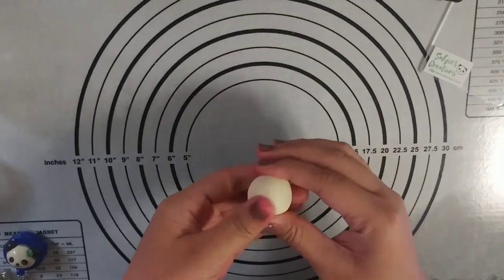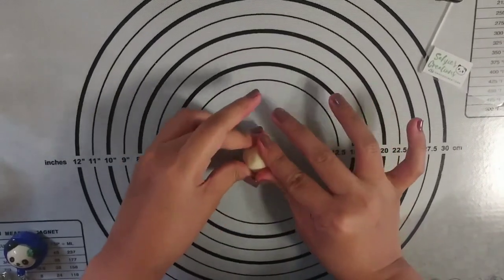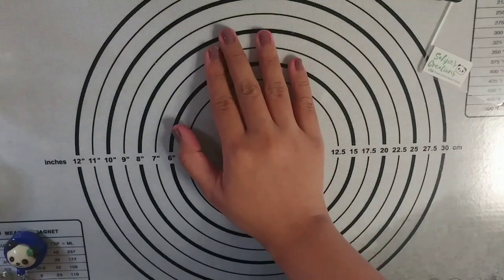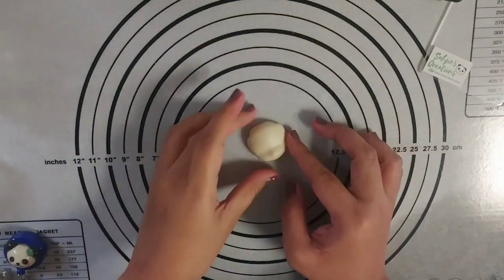Making Tsunako's chibi face is the easiest since she doesn't have any facial features. So you may opt to use a silicone face molder or you can just make a half sphere.